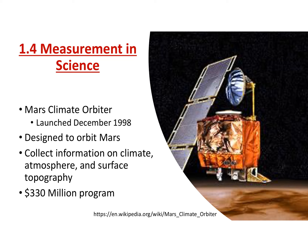I really enjoy this lecture because there are many great examples of why measurement and why units are very important in life and in science especially. In December of 1998, the Mars Climate Orbiter was launched by NASA. It was designed to orbit Mars — to be a satellite of Mars — and collect information on the climate, the atmosphere, and the surface topography of Mars. This was a $330 million program, with many PhD-level engineers and physicists involved.